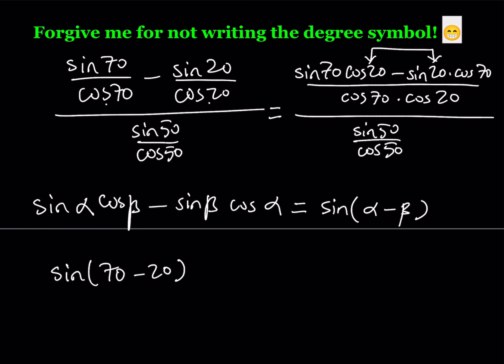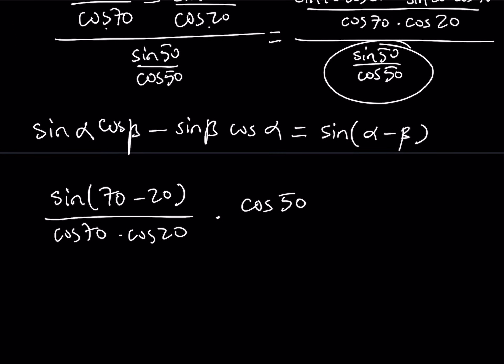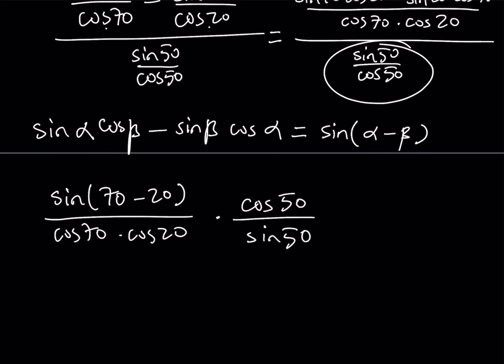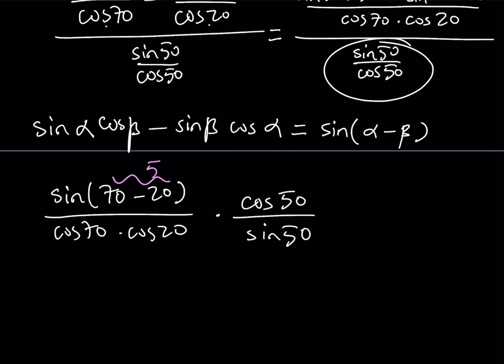Okay, great. We'll simplify that in the next step. That is divided by cosine of 70 times cosine of 20. And of course, the denominator here will be flipped and multiplied. That gives me cosine of 50 divided by sine of 50. Okay, now I have sine of 70 minus 20, which is equal to 50. And this immediately simplifies. You can just cross them out, which is nice.